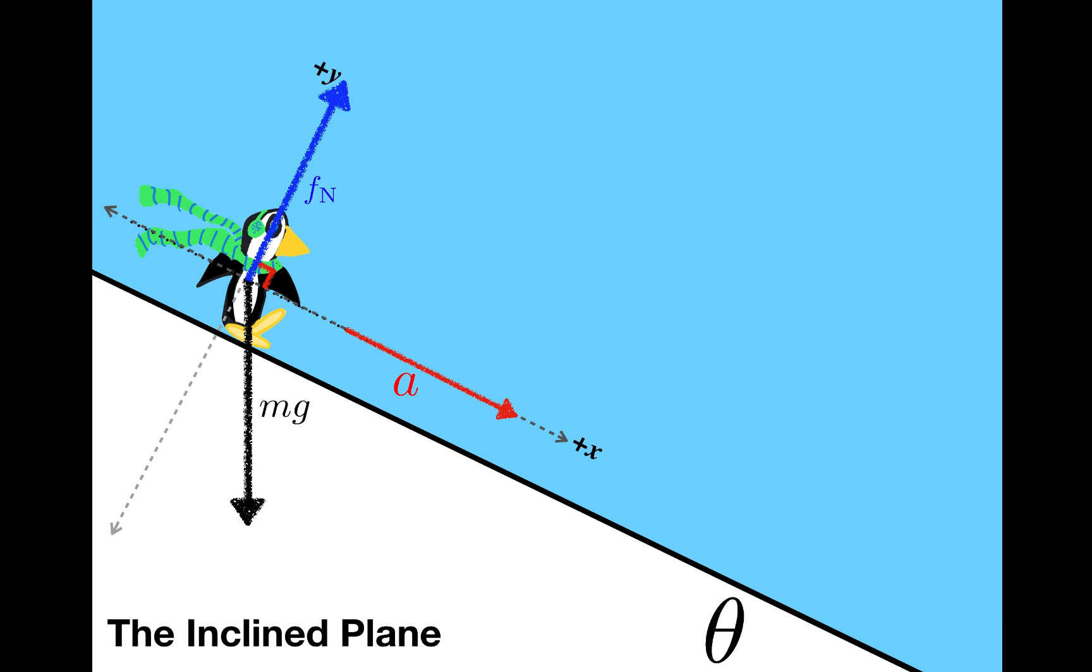Notice that with these axes, the only force that will need to be resolved into components is mg. Because the calculations are simpler, I'm going to do the problem with these axes first. And after that, I'll actually do the calculation with the other set of axes I just showed you, so that you can see that the result is the same. I hope it will also convince you that choosing axes along the direction of acceleration is often the way to go.